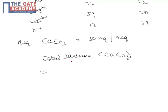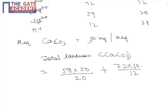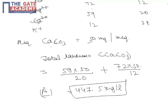It comes out to be: concentration of Ca2+ which is 59, times the milliequivalent weight of CaCO3 which is 50 milligrams per milliequivalent, divided by the equivalent weight of Ca2+ which is 20, plus concentration of Mg2+ which is 72, times 50 divided by 12. Upon simplification, this gives answer A: 447.5 milligrams per liter.